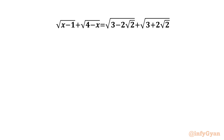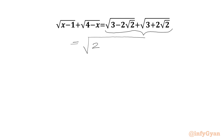Let us get started by simplifying our RHS. First we will simplify the square root of (3 minus 2√2). We can write 3 as 2 plus 1, then we have minus 2√2.